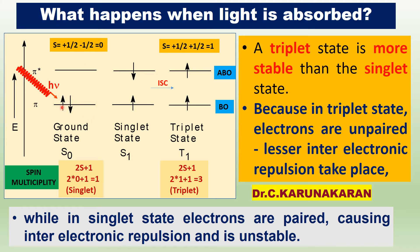According to molecular orbital theory, the pi bond means there is a pi bonding orbital and a pi star antibonding orbital. The two electrons are present in the pi bonding orbital.